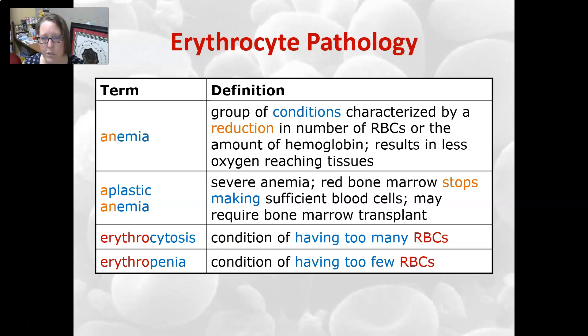Aplastic anemia is a severe anemia where the bone marrow stops making enough red cells and white cells, and it may require a bone marrow transplant.